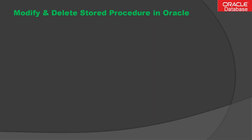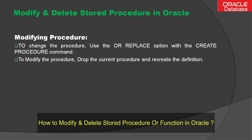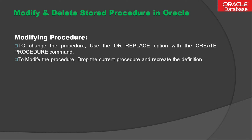To modify and delete a stored procedure in Oracle, let's first understand how to modify a procedure. To change or modify a procedure, you have to use the OR REPLACE option with the CREATE PROCEDURE command. To modify the procedure, you first have to drop the current procedure and then recreate the definition.